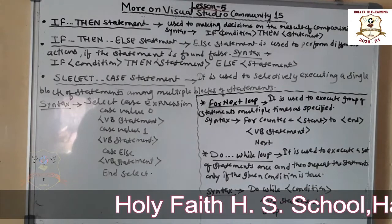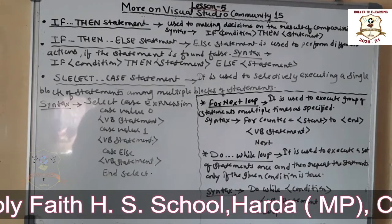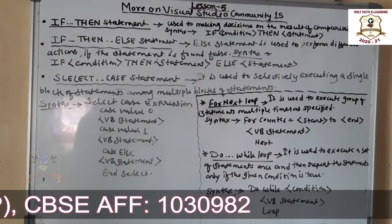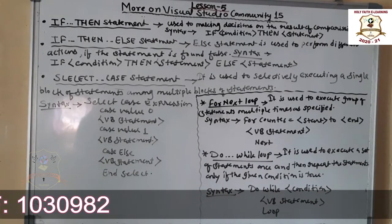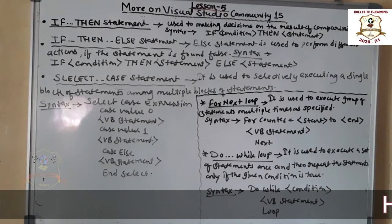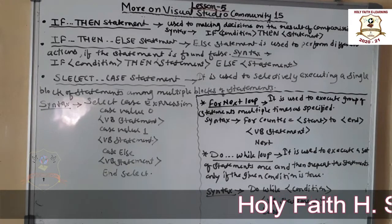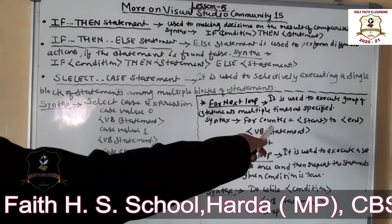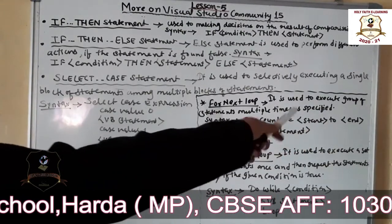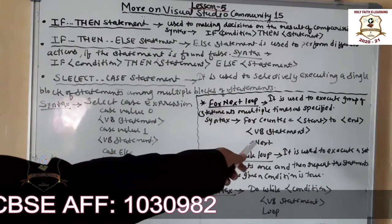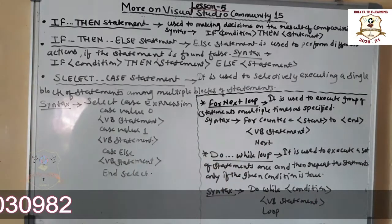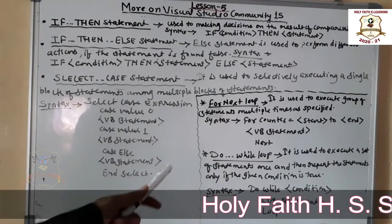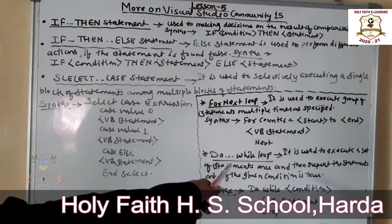The For-Next loop is used to execute a group of statements multiple times as specified. Each loop uses a counter that keeps track of the number of executions. The syntax is: For counter = start To end, then the statements to execute, followed by Next.